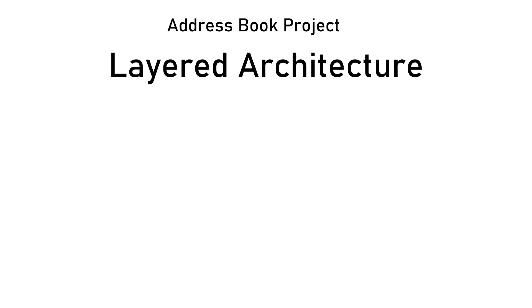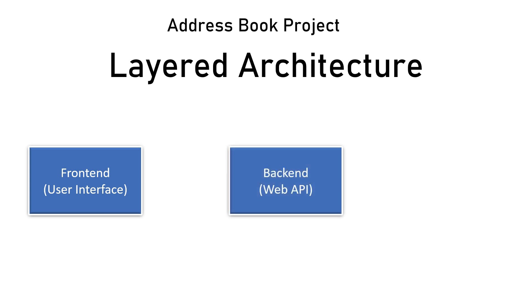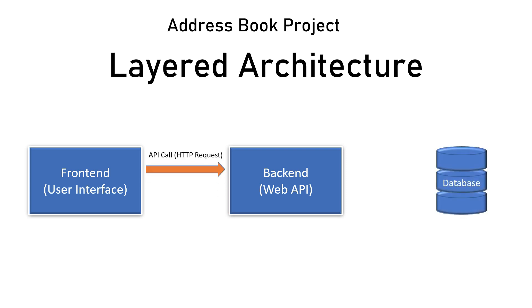With this video we're starting our new project Address Book, and there will be a few separate parts. In the first part we're going to build our front-end Angular application — all data will be hardcoded. After that we'll build our back-end Web API project, which will work with the database. The front-end application will send a request for data to the Web API project, which will request data from the database and display it on the screen.